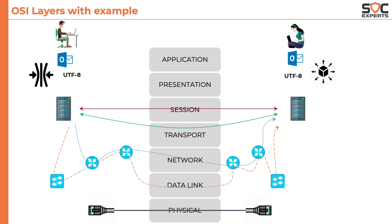A few questions might be bothering you — like, how will the packet reach the router without touching the cables first, which means it would go to layer 1 before hitting layer 3? Or how can a connection be established at the session layer without routers and other network devices, which typically work at layer 3? Yes, your questions are valid. But remember, the OSI architecture is called the reference model — it's a theoretical model.